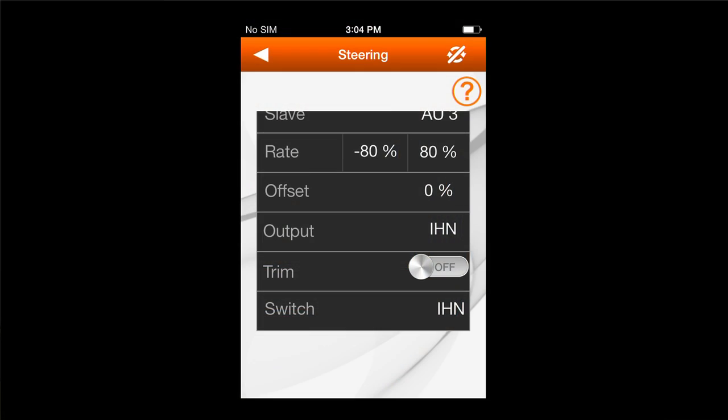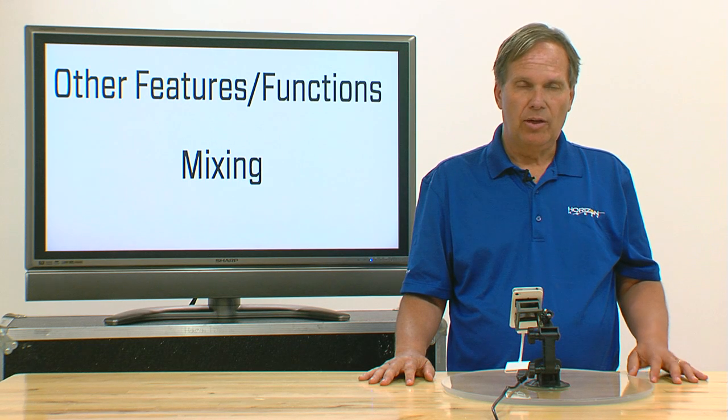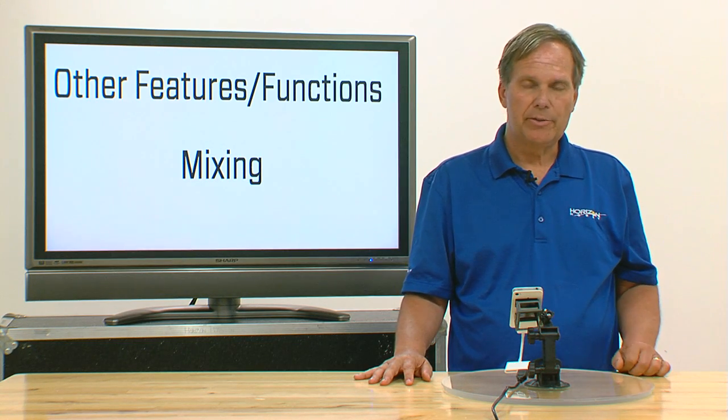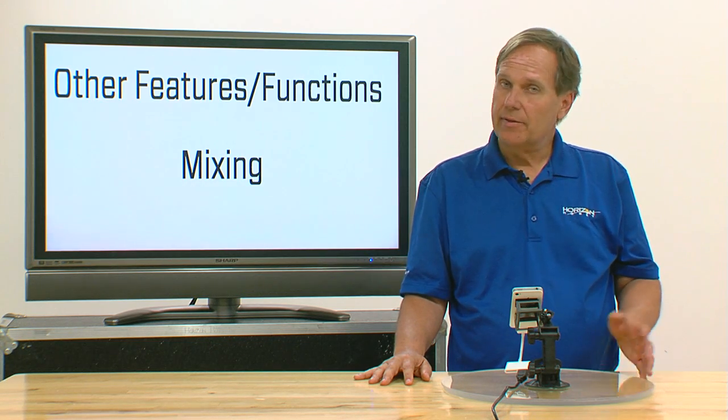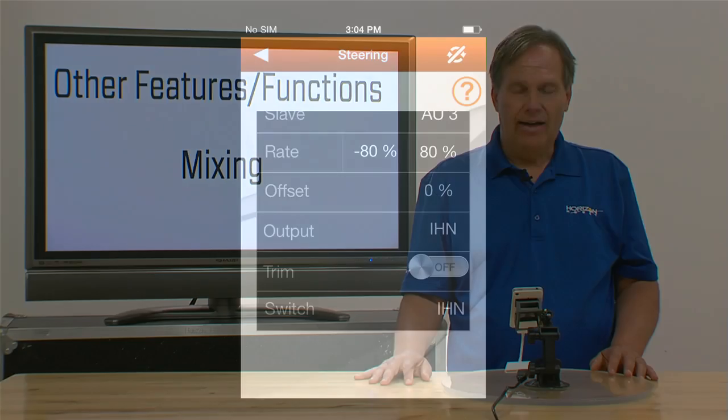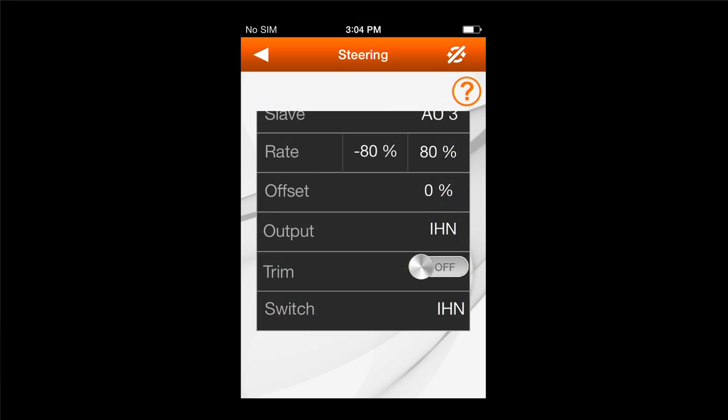Trim. I either want trim off or on. What that does, the rudder has trim. So for example, if I want, when I give right rudder trim or left rudder trim, do I want that trim to transfer to my steerable nose wheel or not? In this case, no, I don't. If I wanted that trim to transfer, then I would move this to on. In this case, I don't want that to transfer, so I'd leave it to off.